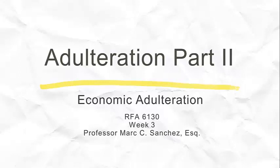We are continuing in this second portion of adulteration by focusing on economic adulteration. Economic adulteration may not be something we think about all the time. We may think of aesthetic adulteration—rodents and pests being in the facility—and that type of adulteration. We introduced the concept of injurious adulteration, but now we're really talking about something different. We can see modern examples as well as historical examples when we look at the passage of the 1906 Act.